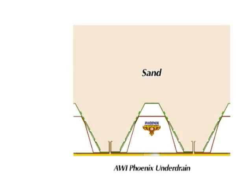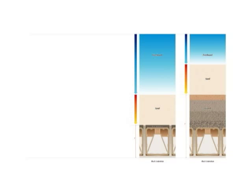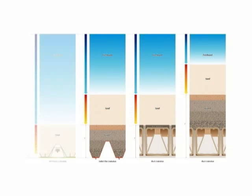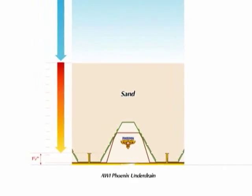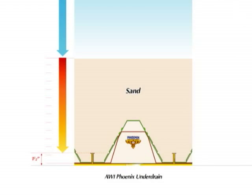With the AWI Phoenix under drain, support gravel is a thing of the past and filtration continues to within an inch and a half of the floor. The AWI Phoenix under drain maximizes free board and media bed depth because there is no support gravel. It has the lowest profile; filtration continues to just an inch and a half above the filter floor.